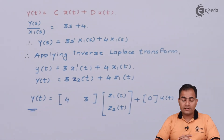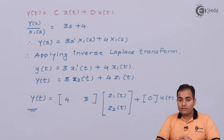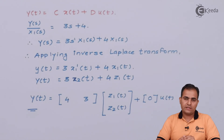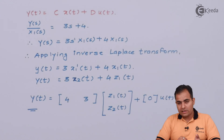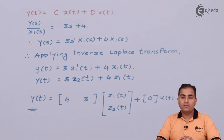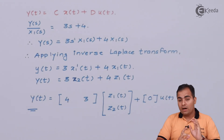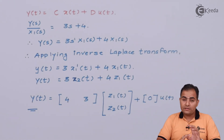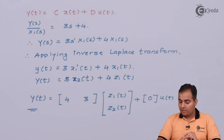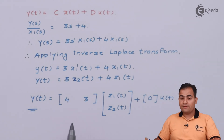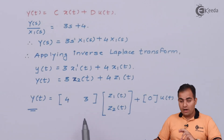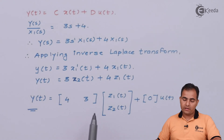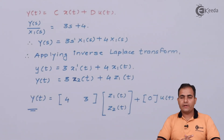To summarize: in the first two problems a differential equation was given, and in problems 3 and 4 a transfer function was given. You now know how to obtain the state variable model from both forms. In the next video, problem number 5, we will study the reverse operation — obtaining a transfer function from a given state variable model.